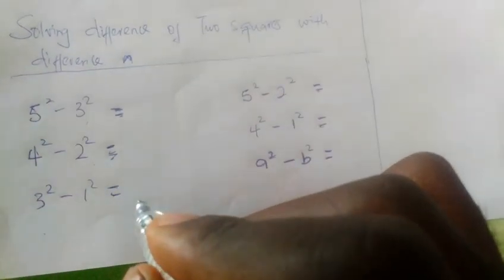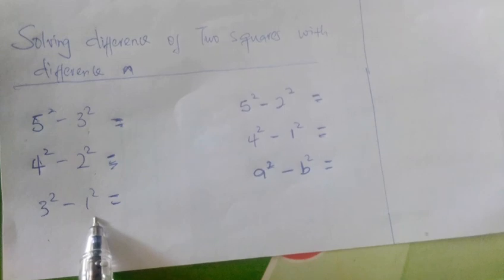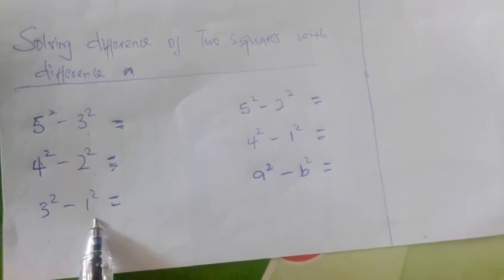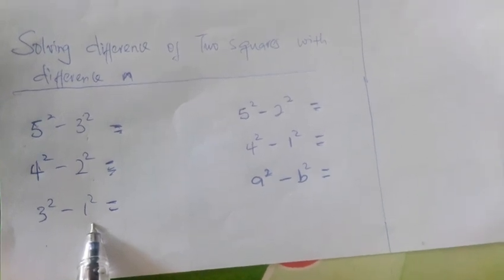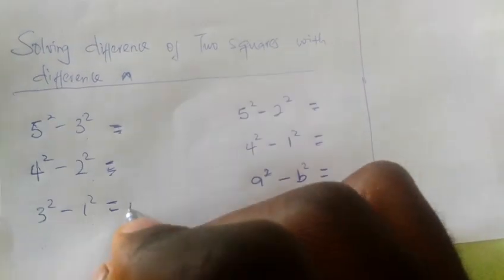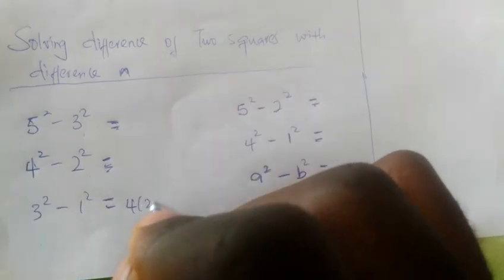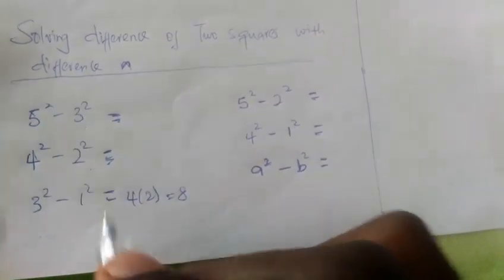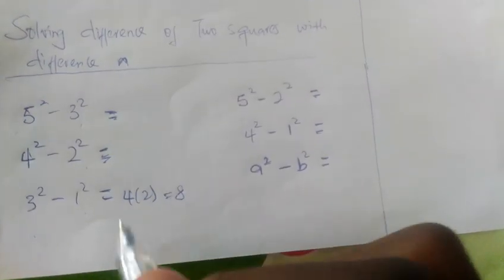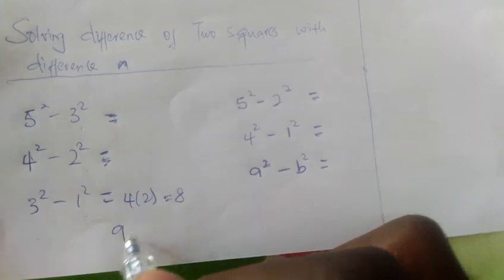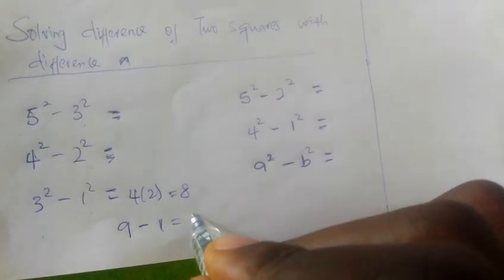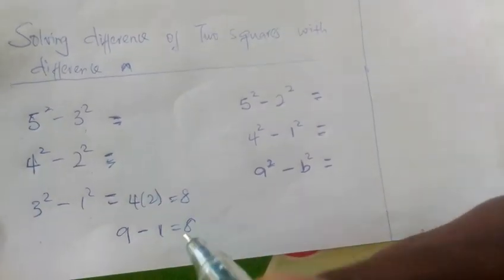The idea here is to add the bases — 3 plus 1 gives 4. Then 4 times the difference, that's 4 times 2, and the answer is 8. To prove it: 3 squared is 9 minus 1 squared is 1, which equals 8 still.